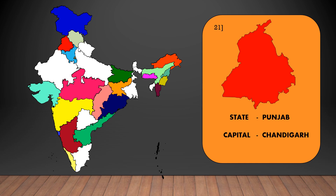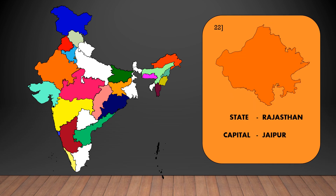The capital of Punjab is Chandigarh. The capital of Rajasthan is Jaipur.